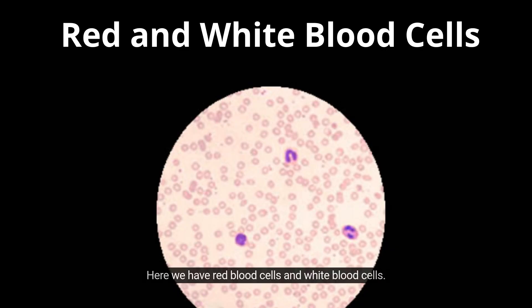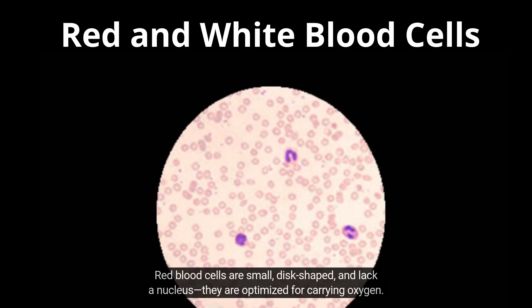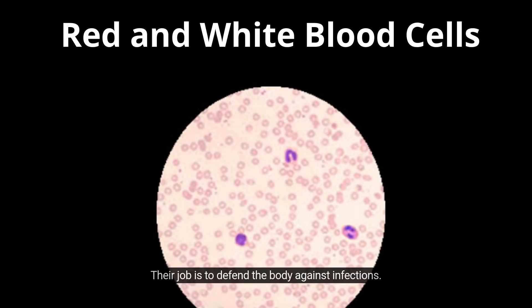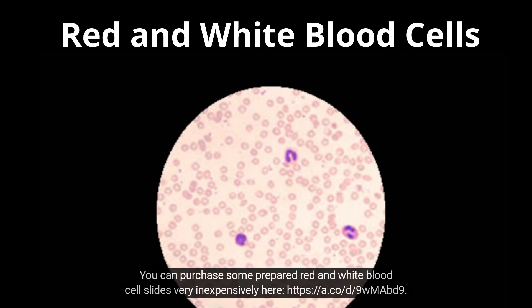Here we have red blood cells and white blood cells. Red blood cells are small, disc-shaped, and lack a nucleus — they are optimized for carrying oxygen. White blood cells are larger, contain nuclei, and may appear irregular or granular. Their job is to defend the body against infections. The contrast between these two types highlights the specialization of human cells.